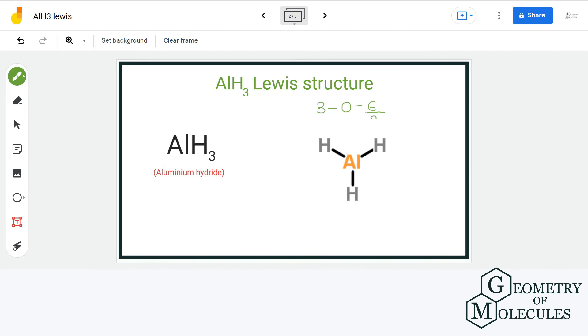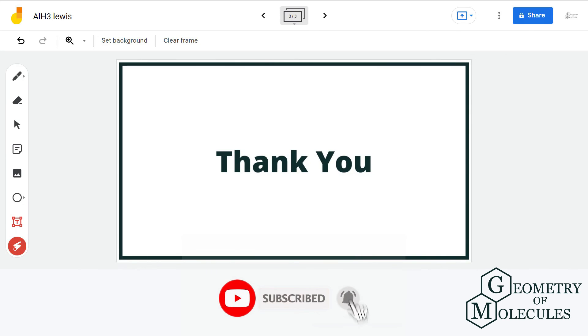Thus each atom present in this structure has zero formal charge, and this is the final Lewis structure of AlH3. For more such videos, make sure to subscribe to our channel and thank you for watching.